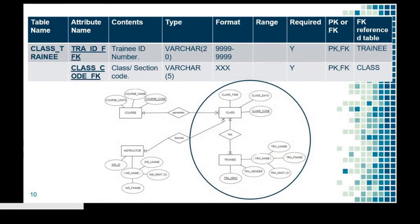Now for the many-to-many relationship: the rule is that for every many-to-many relationship, you should create another table. That's why we create another table here called class_trainee. The primary keys of the tables participating in the relationship should be both the primary key and the foreign key of the new table. That's why we have TRA_ID_FK and class_code_FK, which refer to the primary keys of trainee and class respectively, and at the same time they form the composite primary key of the new class_trainee table.